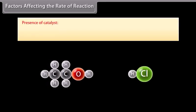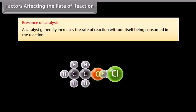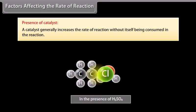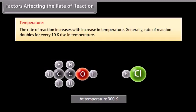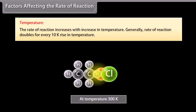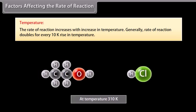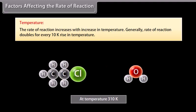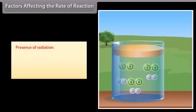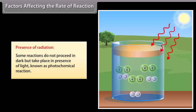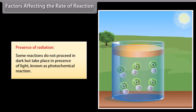Presence of a catalyst: a catalyst generally increases the rate of a reaction without itself being consumed in the reaction. Temperature: the rate of a reaction increases with an increase in temperature; generally, the rate of a reaction doubles for every 10 Kelvin rise in temperature. Presence of radiation: some reactions do not proceed in dark but take place in the presence of light, known as photochemical reactions.